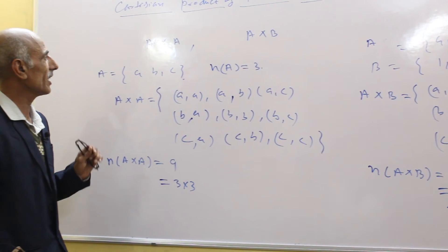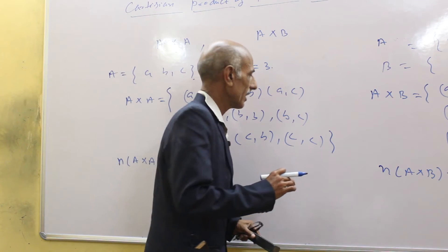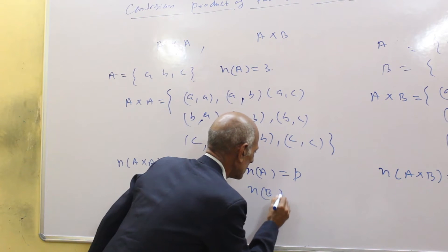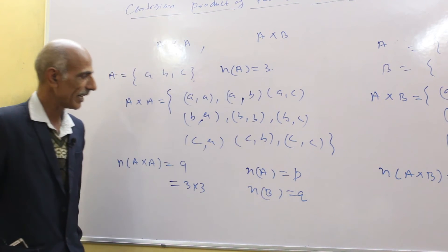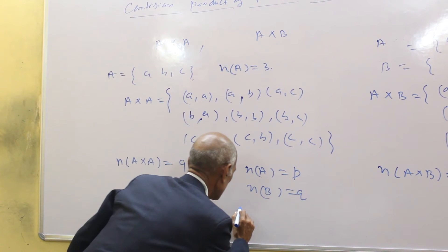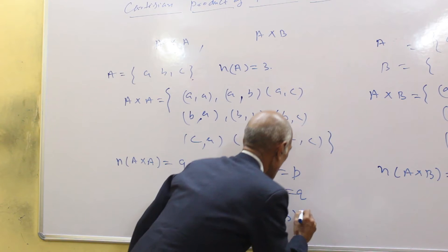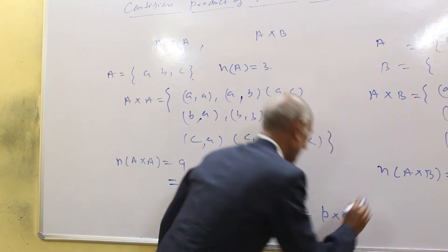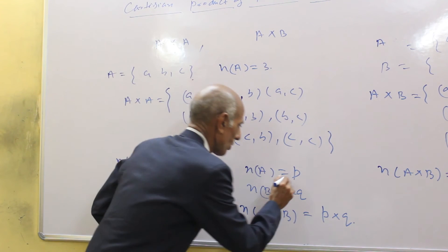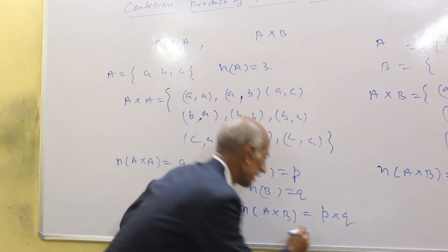In general, if there are two sets A and B, where the number of elements in A is P and the number of elements in B is Q, then the number of elements in the Cartesian product A × B is equal to N(A) × N(B), which is P × Q, or we can write it as PQ.